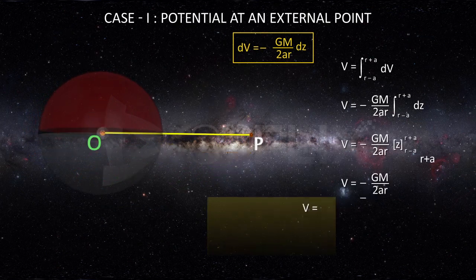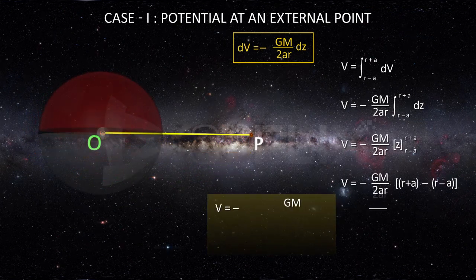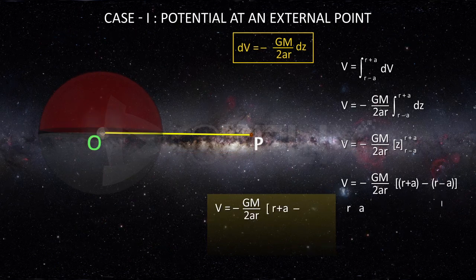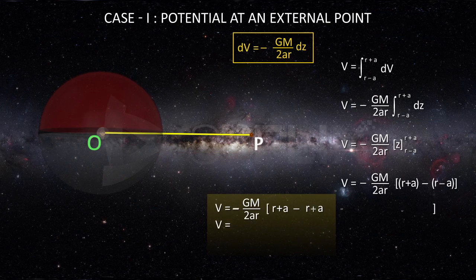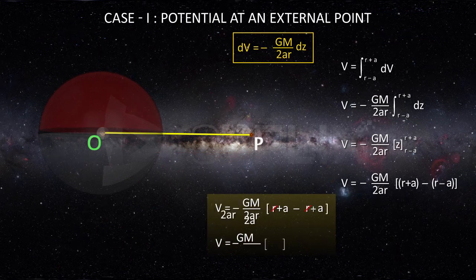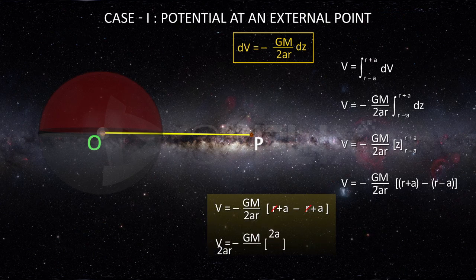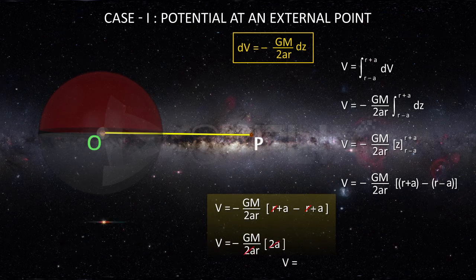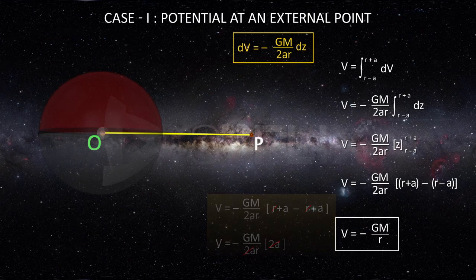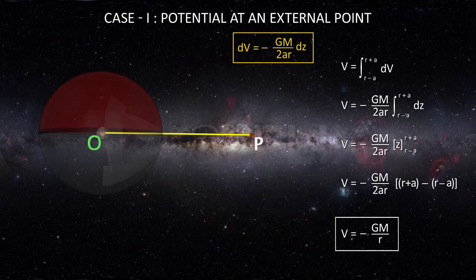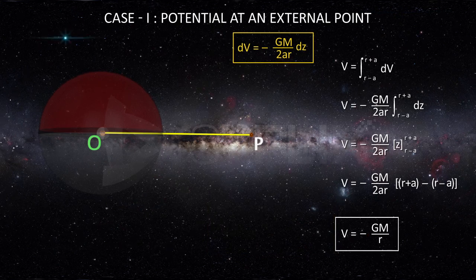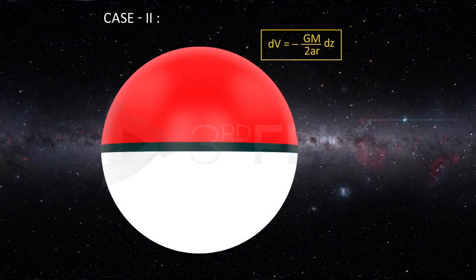On substituting the limits, the net gravitational potential outside the shell is minus Gm by r. Hence, for all external points, the spherical shell can be assumed to be a point mass concentrated at its center.